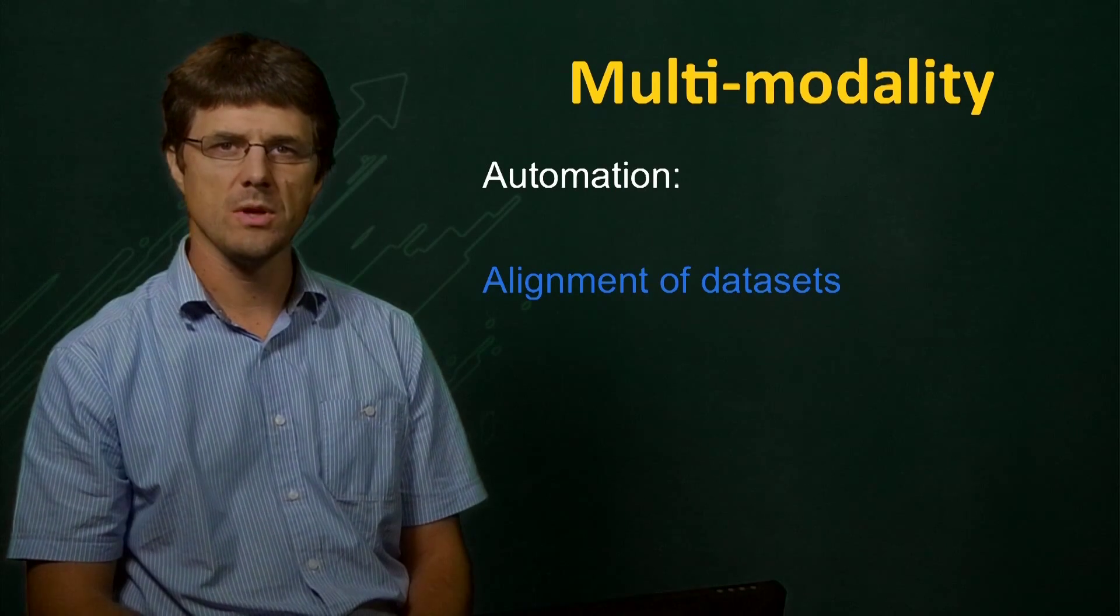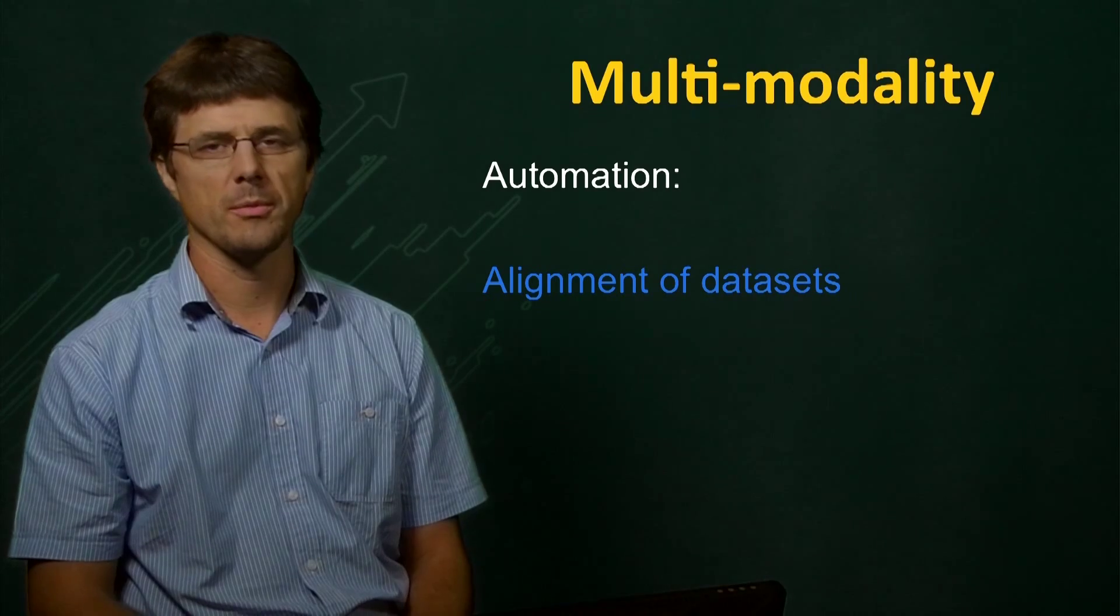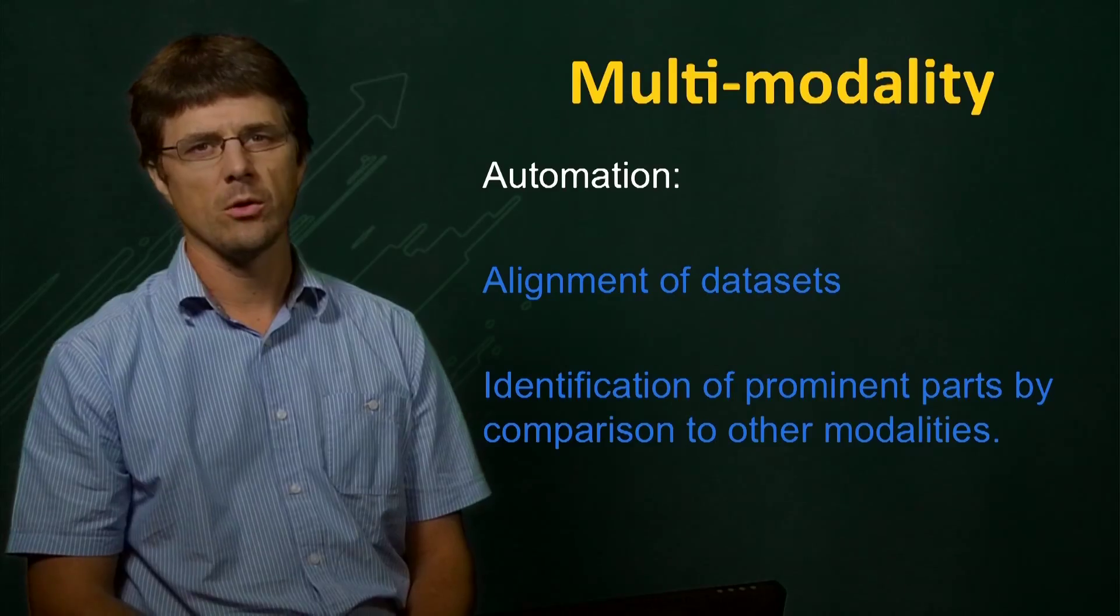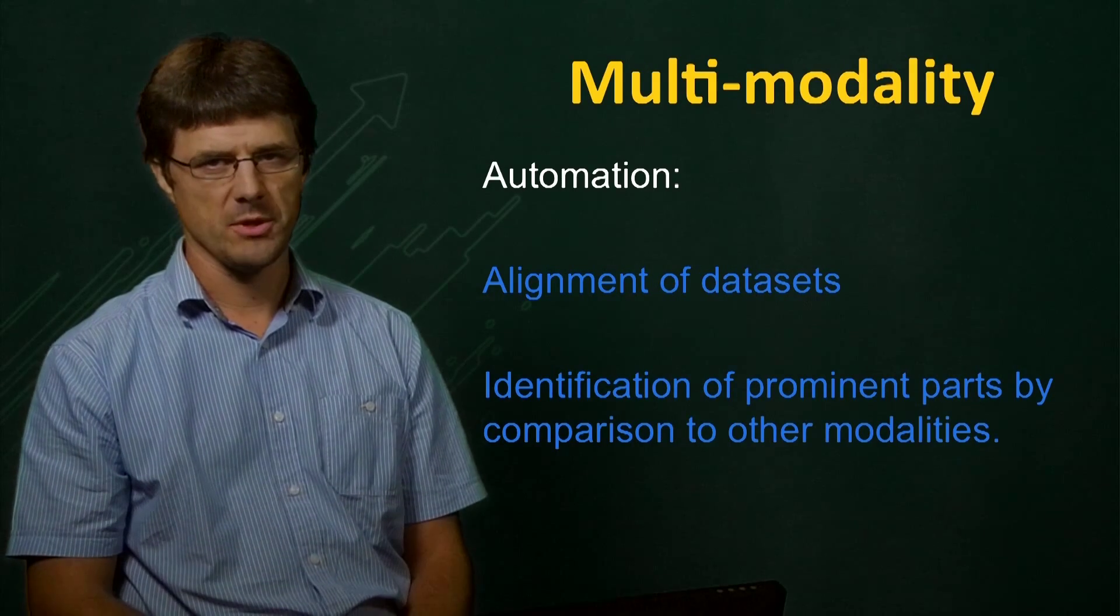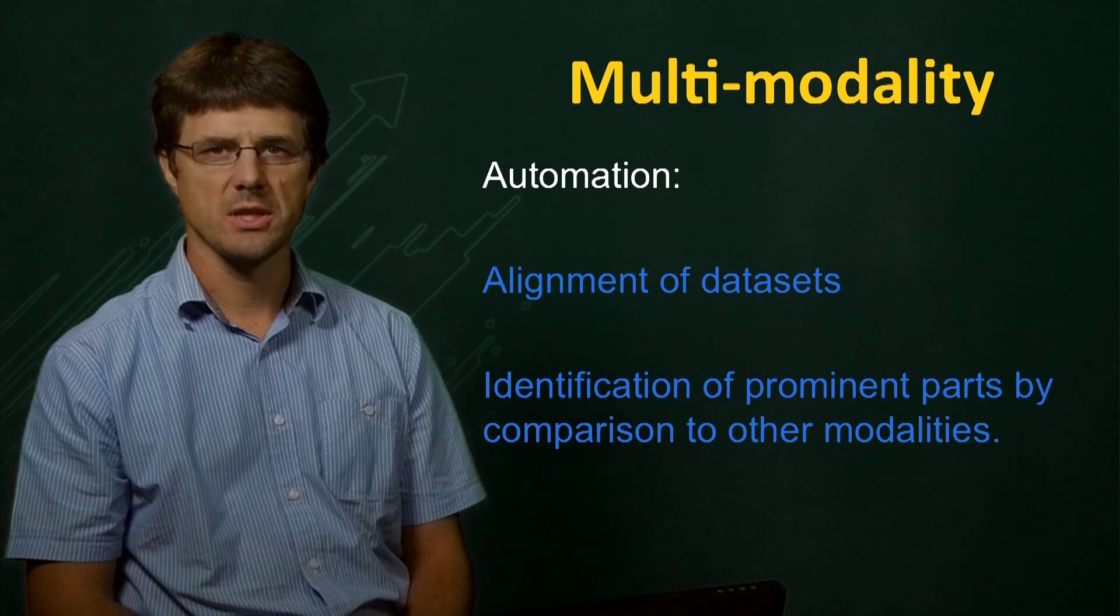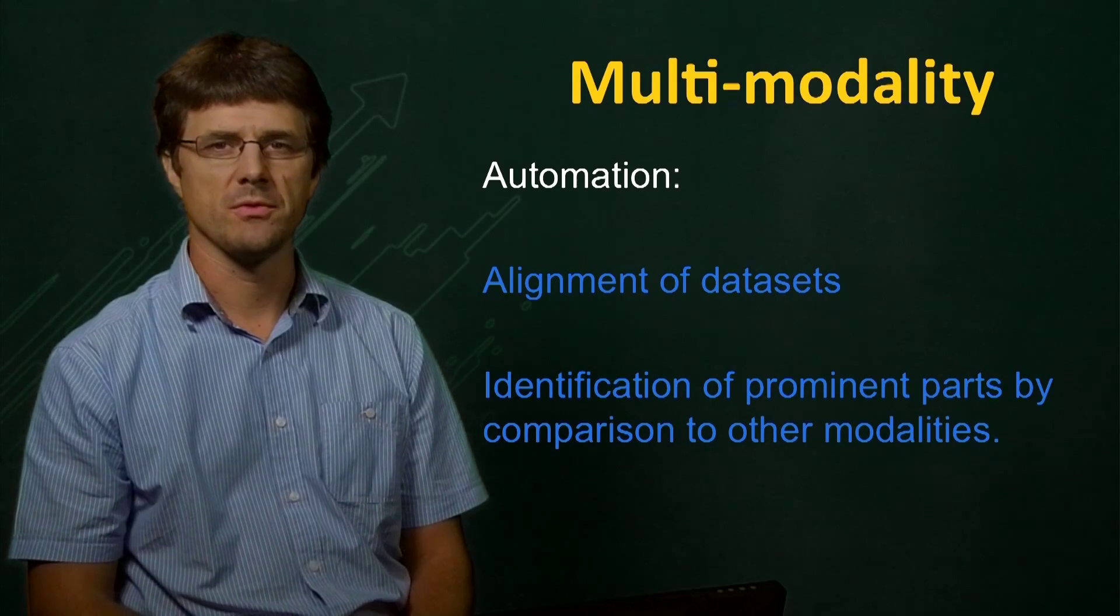This gives us two image analysis problems that we can automate: the alignment or registration of datasets, and automatically aligning datasets to other modalities in which abnormalities are present. This allows us to identify prominent parts of an image for further review.